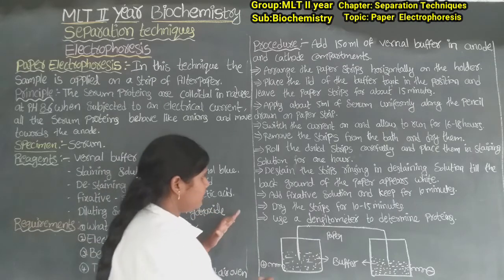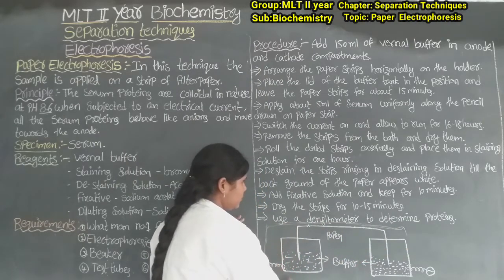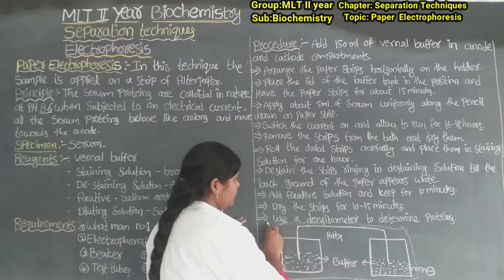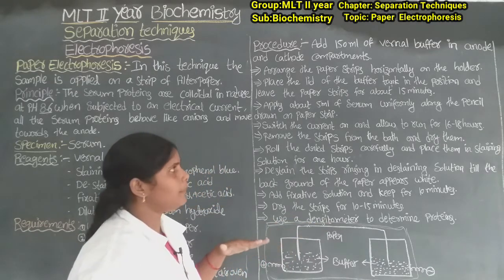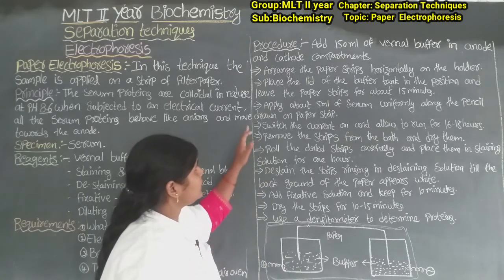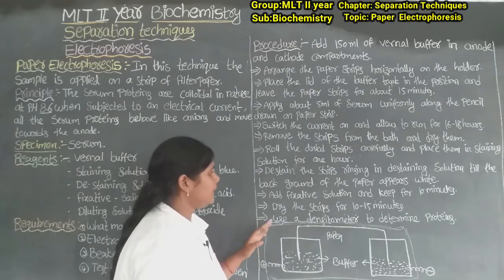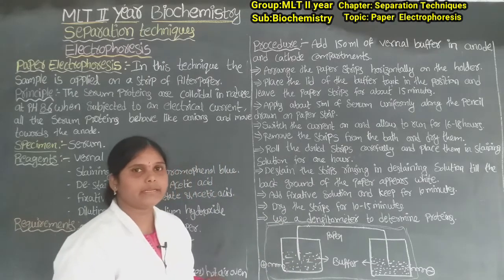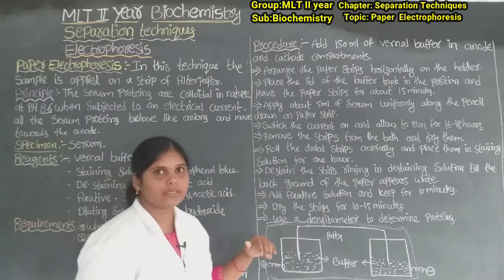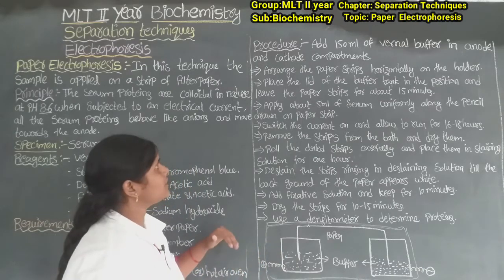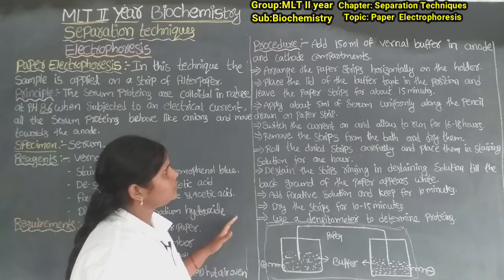After placing the paper, we close the glass lid of the electrophoresis chamber. We leave it closed for about 15 minutes to equilibrate. After that, apply about 5 µl of serum uniformly along the pencil line drawn on the Whatman No. 1 filter paper strip. Using the micro pipette, apply the serum sample on the paper. Then switch the current on and allow to run for 16 to 18 hours.